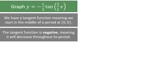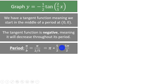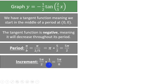The period of a tangent function can always be found by taking pi and dividing by the coefficient on x. Pi over b is pi over 2 fifths. If we reciprocate and multiply by the denominator, we get pi times 5 over 2, which is the same thing as 5pi over 2. The period of this function is 5pi over 2, meaning every 5pi over 2 radians this function will repeat itself. We will have an important point or an asymptote at every quarter of the period: 5pi over 2 times 1 quarter equals 5pi over 8.